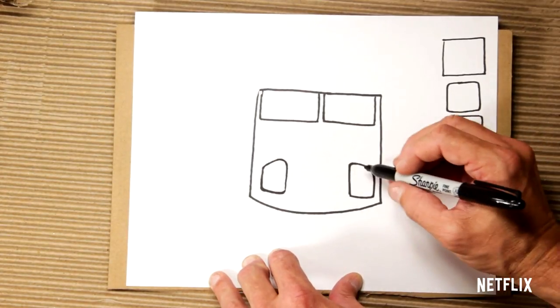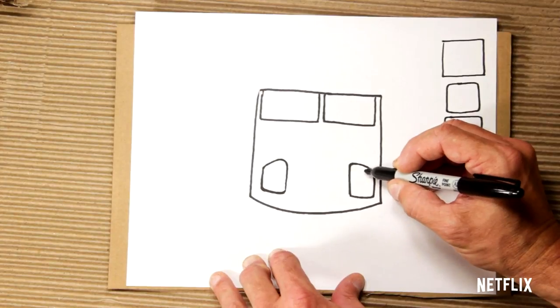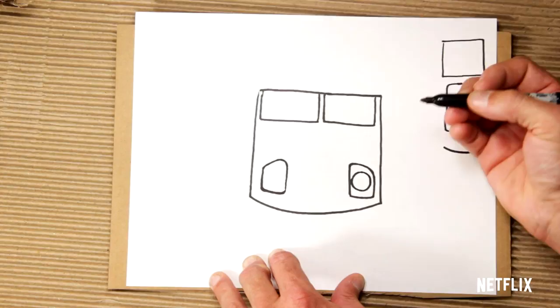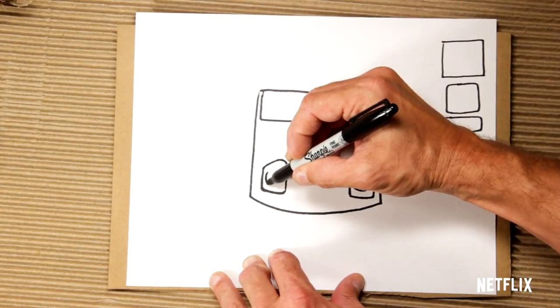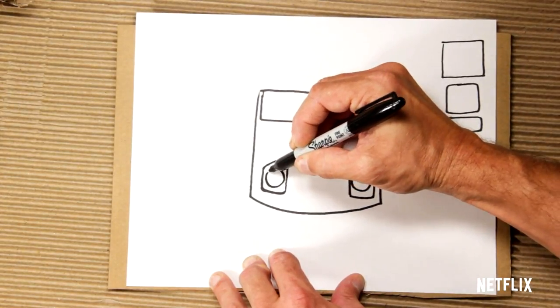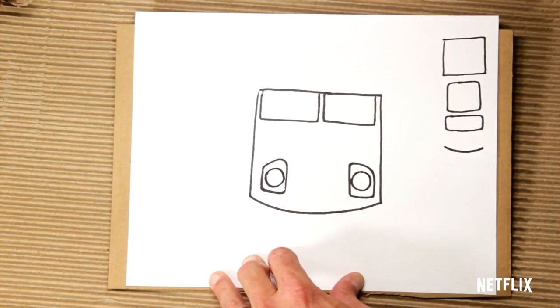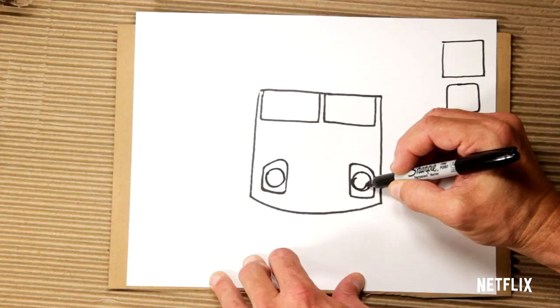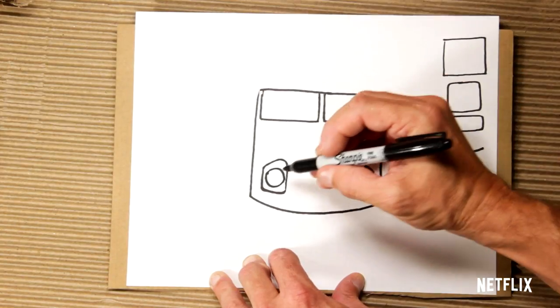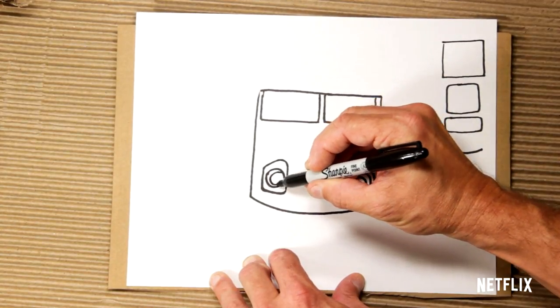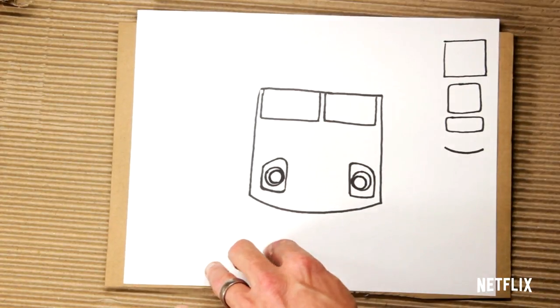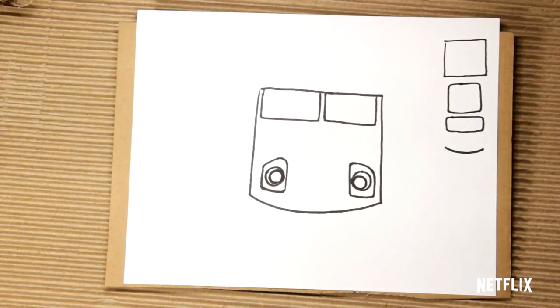Now inside those are his eyes, which are headlights, and those are round. So we're going to do some round circles in there, one, another one. Then in the eyes are his pupils in there, round. Oh, that's good enough.